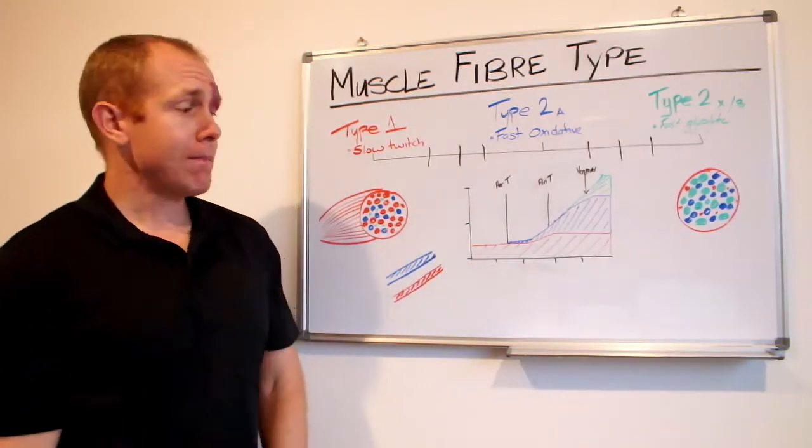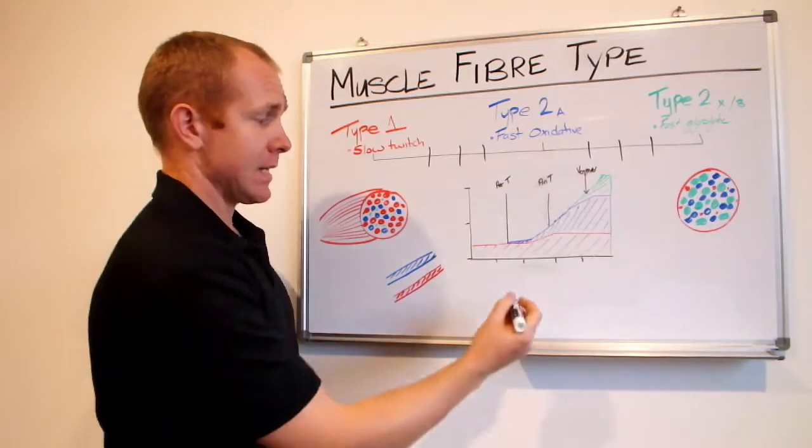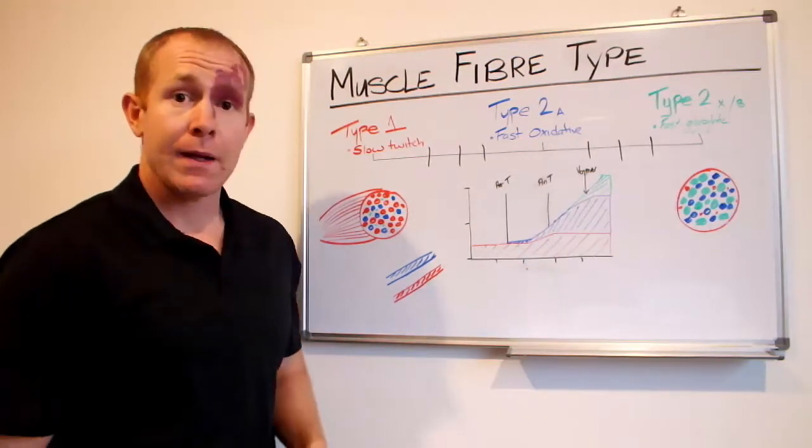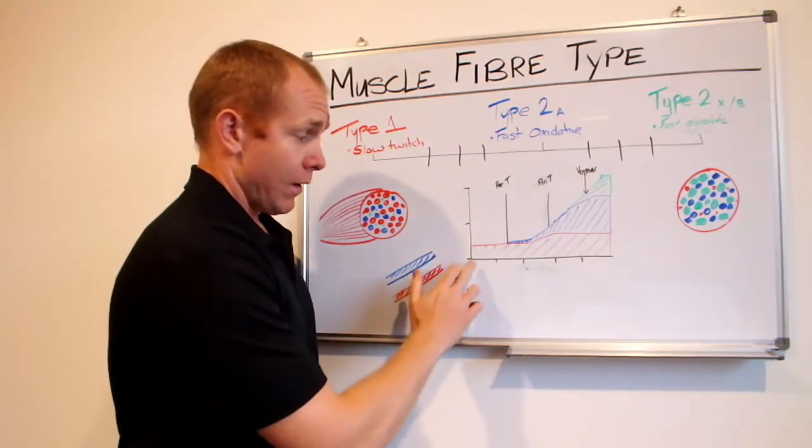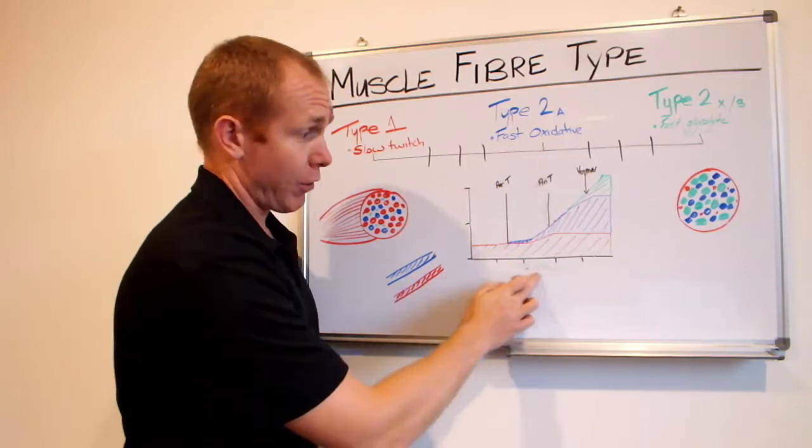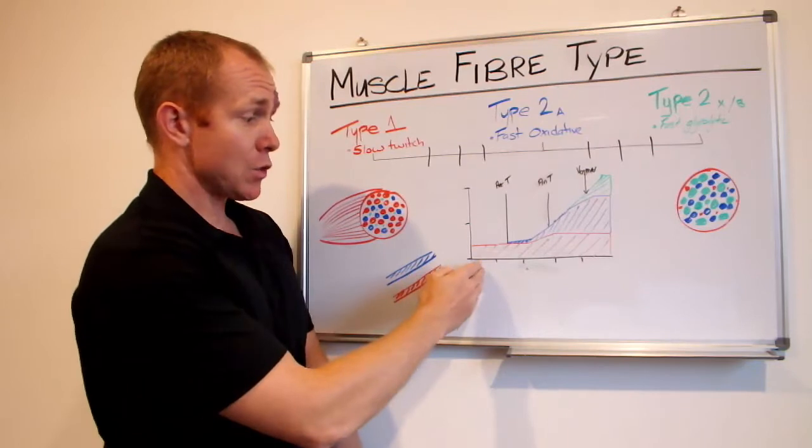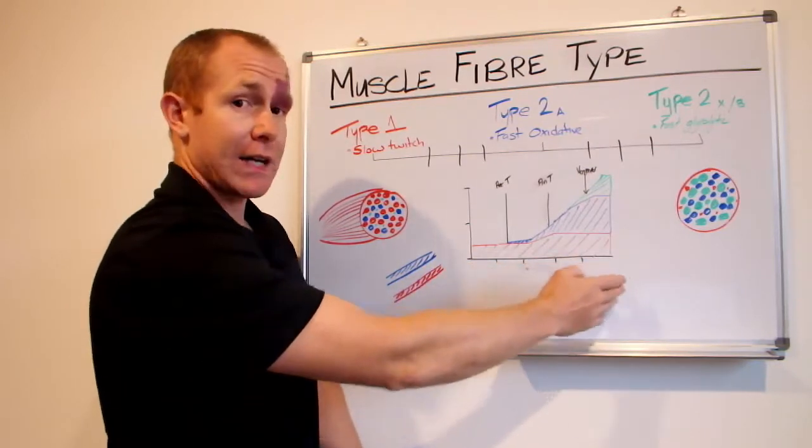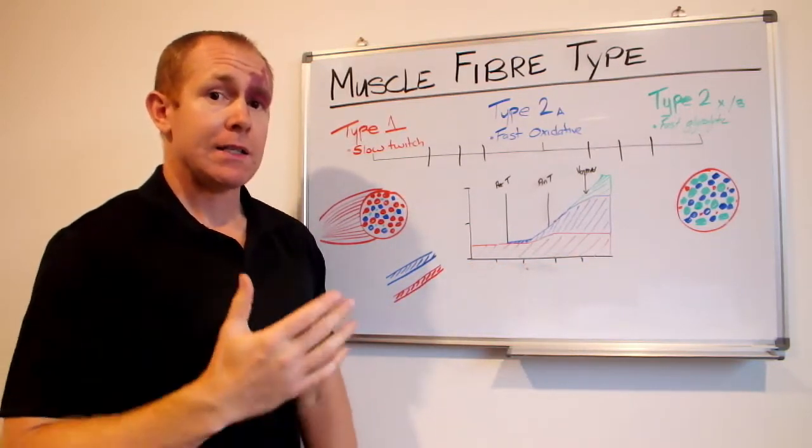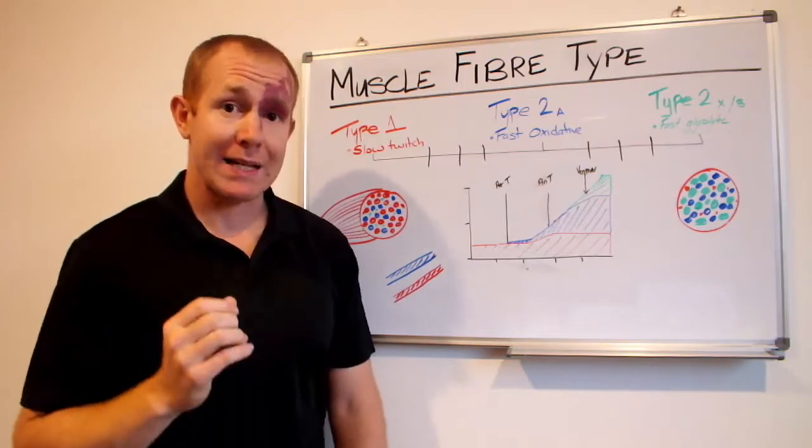Now when we are exercising, if you can imagine here, this here can be thought of as speed, power - low speed, low power here through to high speed, high power down here. Now as we progress and get faster and faster or work harder and harder, different muscle fibers are recruited at a different time.